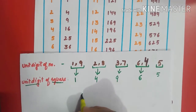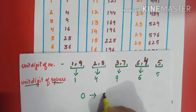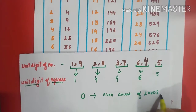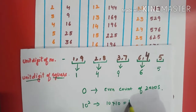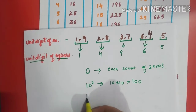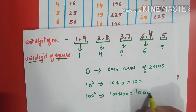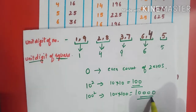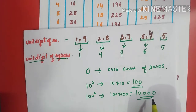If any number ends in 0, its square will have an even count of zeros. For example, 10 square is 100 — two zeros. 100 square is 10,000 — four zeros. So if a number ends in zeros with an even count, that number may or may not be a perfect square.